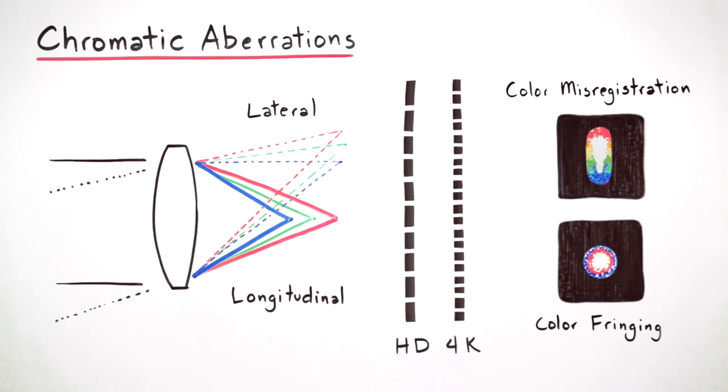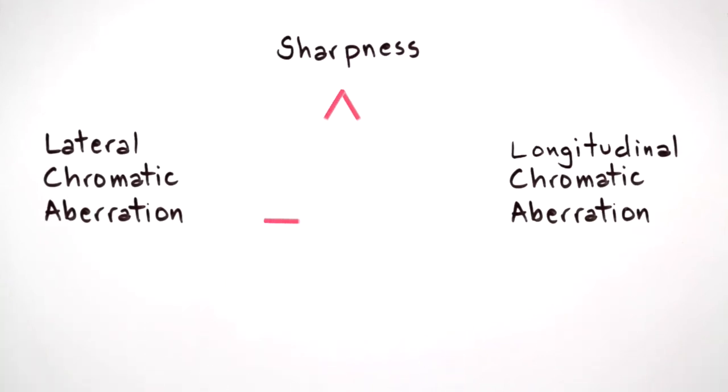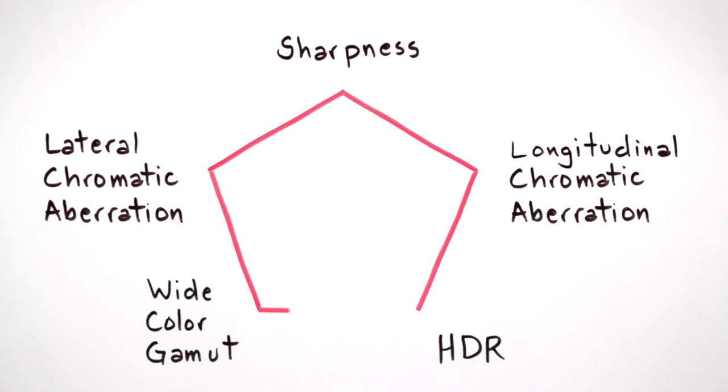Moving to 4K makes chromatic aberrations more visible and thus more important to reduce. And now, with recent ITU standards for UHD upping the bar by adding high dynamic range and wide color gamut to the mix, optical performance demands are even greater.